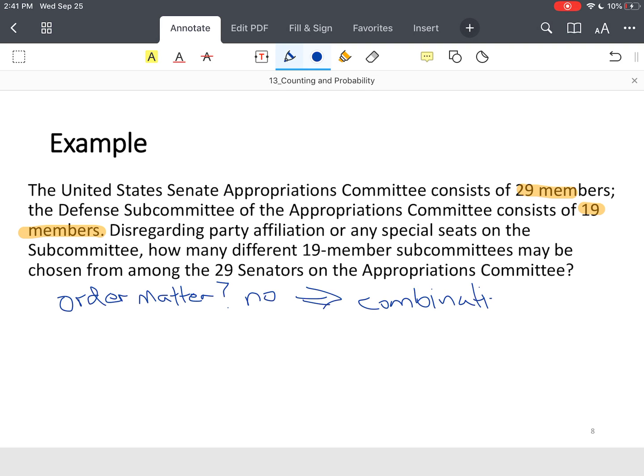We'll use a combination formula. And again, most scientific calculators have these functionalities built in. You just have to search, do a Google search for your particular calculator and put in combination or permutation. And it'll show you the keystrokes.